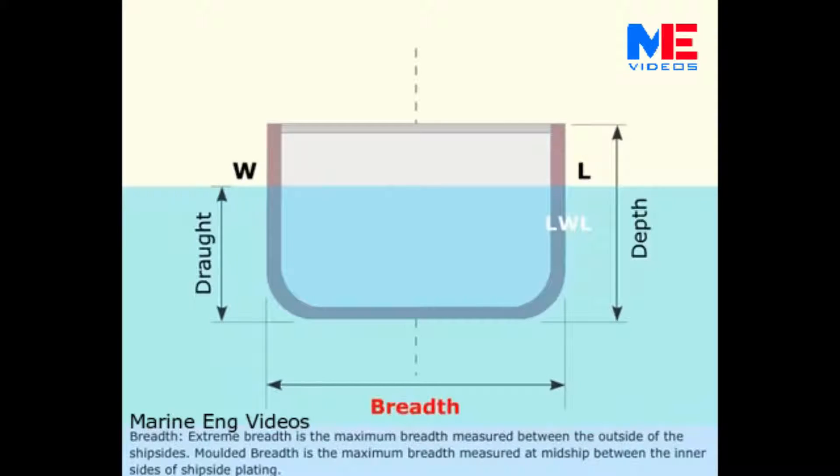Breadth. Extreme breadth is the maximum breadth measured between the outside of the shipsides. Molded breadth is the maximum breadth measured at midship between the inner sides of shipside plating.